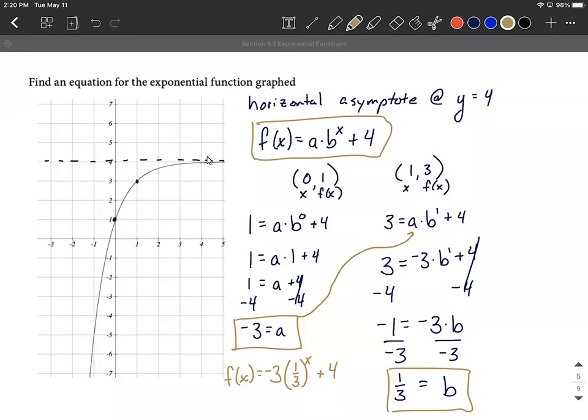All right, hope this helps out. Locate that horizontal asymptote first if it's been moved off the x-axis and use a transformation such as this to move it up. All right, hope this helps out. Good luck as you're trying to find equations of exponential functions based on graphs.